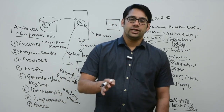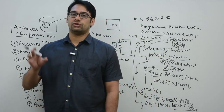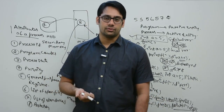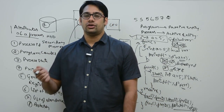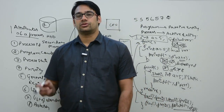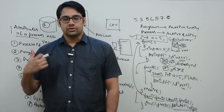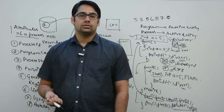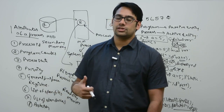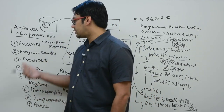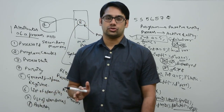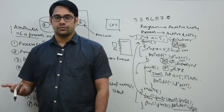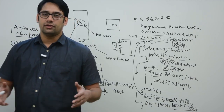These process attributes change from operating system to operating system. For Linux-based systems like Ubuntu or Fedora, and for Windows 10, 8, or 7, the specific attributes used may differ. The attributes listed are standardized ones that are commonly used, but operating system developers can add additional attributes to make their OS more efficient and effective.